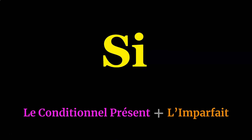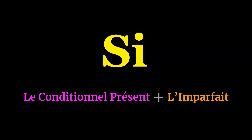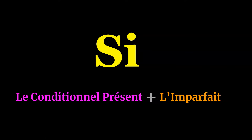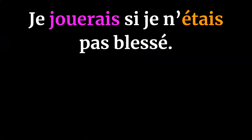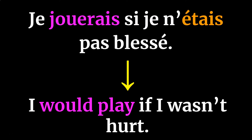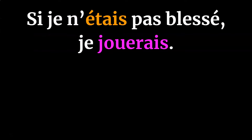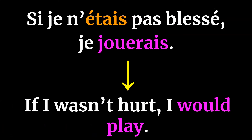You'll often see le conditionnel présent partnered up with l'imparfait in sentences that use the word si, which means 'if.' For example, here we have a hypothetical situation where a condition needs to be met for the action to occur. So: je jouerais si je n'étais pas blessé, which translates to 'I would play if I wasn't hurt.' This sentence can be flipped: si je n'étais pas blessé, je jouerais, which translates to 'if I wasn't hurt, I would play.'